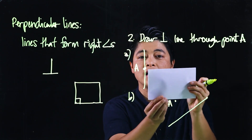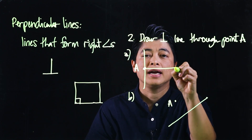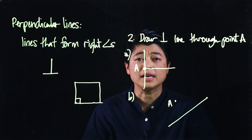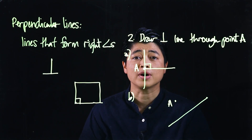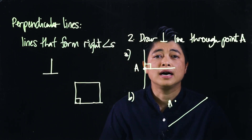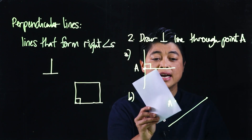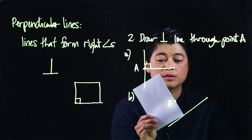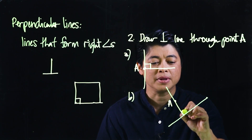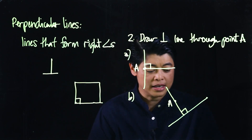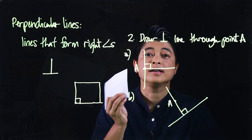If I use a corner as my tool, this will be the perpendicular. Normally when we draw perpendicular lines, we also draw the symbol of a right angle being formed. It says through point A, so the line has to go through that point — and there's my tool, so that will be my perpendicular.